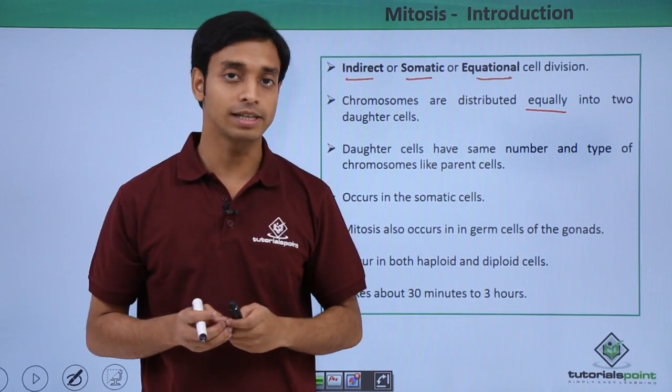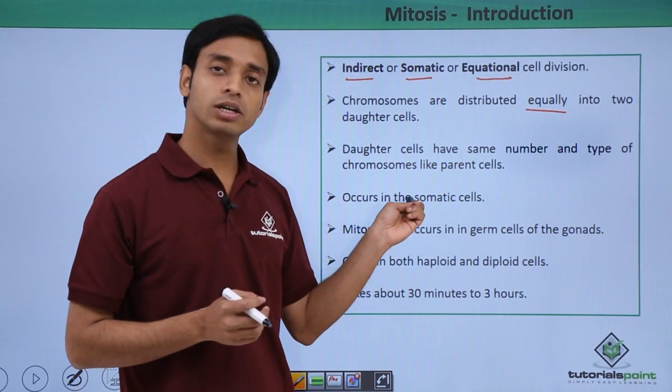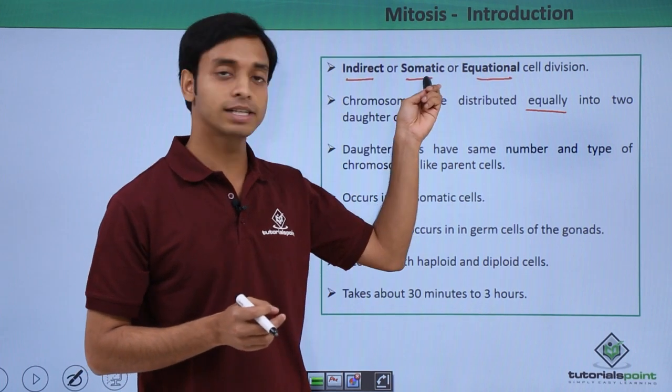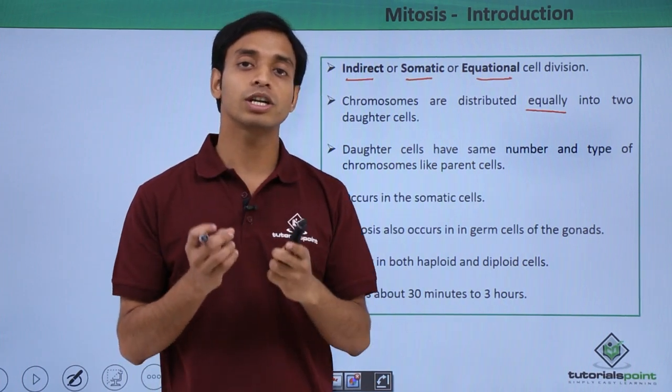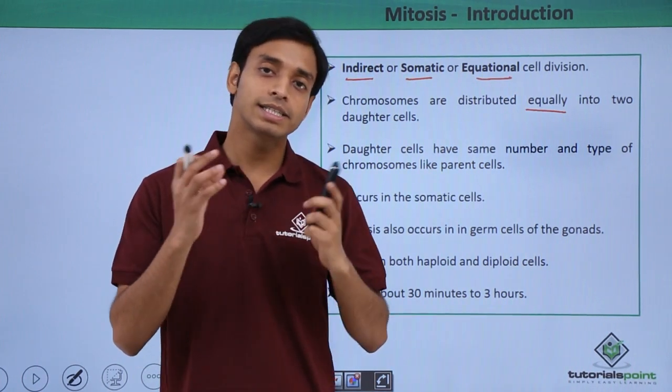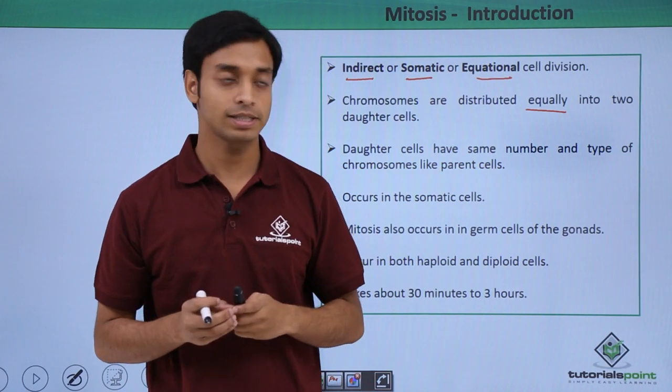This occurs in the somatic cells. Hence we have already discussed they are known as the somatic type of cell division. That means the cells which are not the reproductive cells, cells other than the reproductive cells, these are the somatic cells.